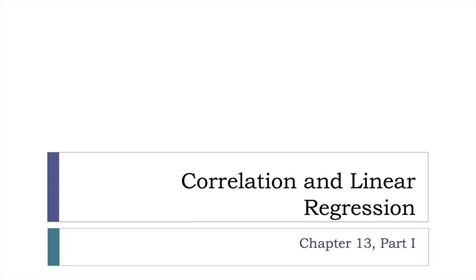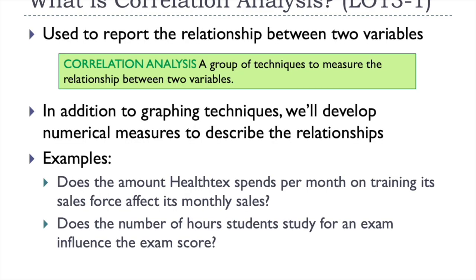We're going to develop numerical measures to express the relationship between the two variables and also develop an equation that helps express that relationship. It will tell us things like: is the relationship weak or strong? Is it direct — meaning there's a positive relationship where as the independent variable goes up so does the dependent? Or is it an inverse relationship where as the independent variable goes up, the dependent goes down? So first, what is correlation analysis?